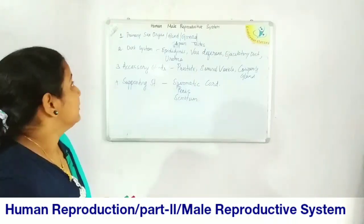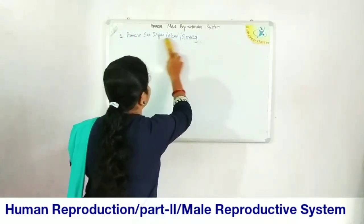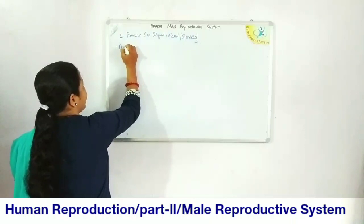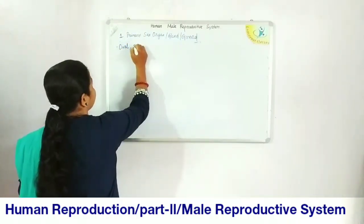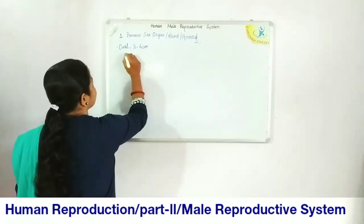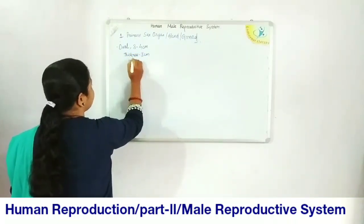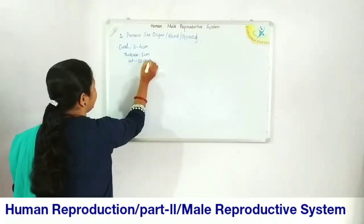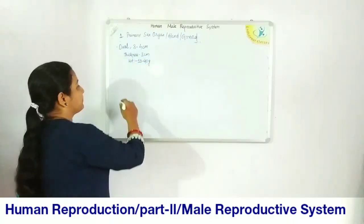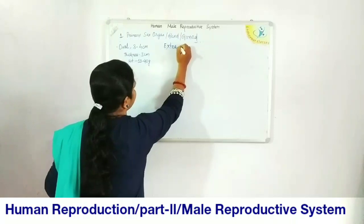First, we will move to the primary sex organ — the male gonad. There are a pair of testes which are oval in shape. The length varies between 3 to 4 cm, the thickness is about 3 cm, and the weight varies between 10 to 40 grams in an adult male. This weight decreases in old age.